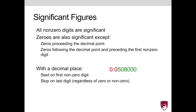So if we begin at the first non-zero digit, which is 5, and end at the last digit, regardless of if it's 0 or non-zero, the significant figures are 50800.